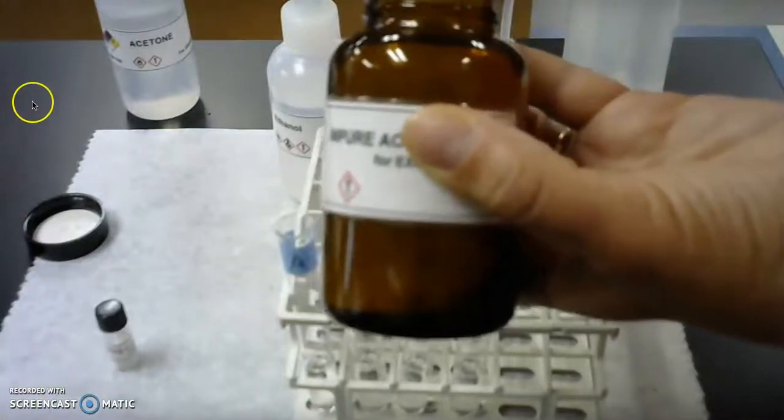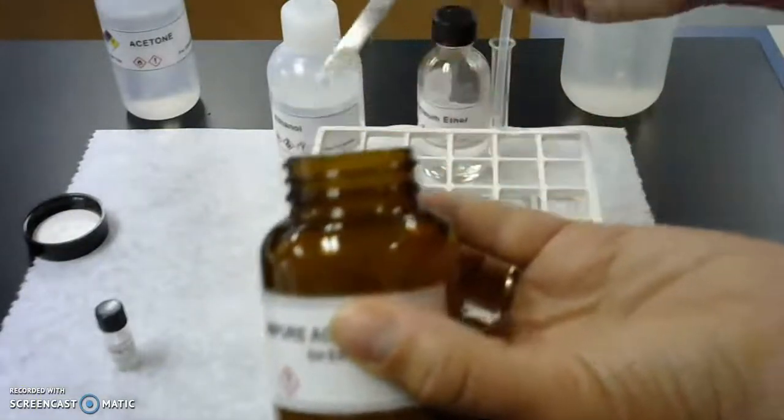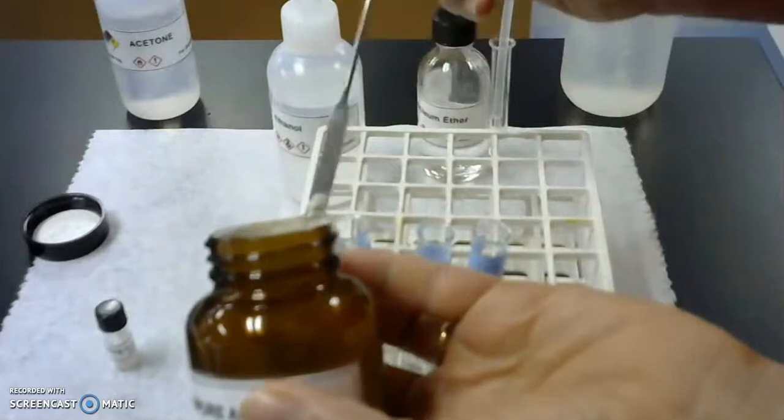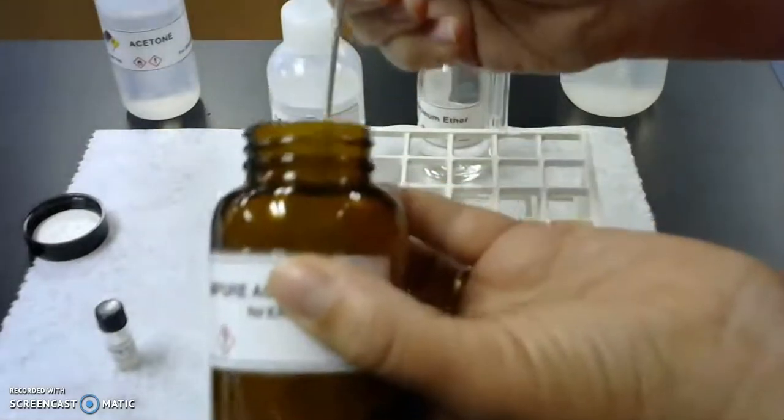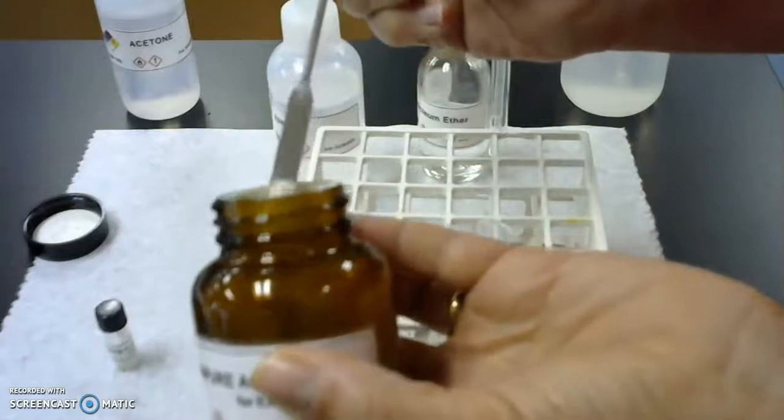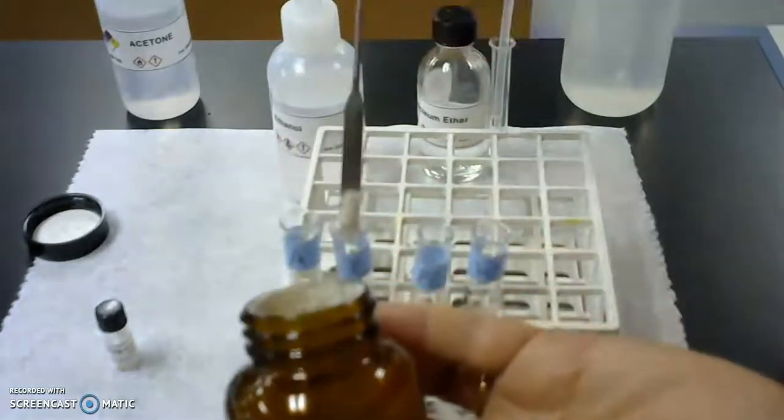So you can see how much I'm going to add right here right now. So just enough to cover the bottom third or so of the spatula, and I'll add the acetanilide to each of the test tubes.